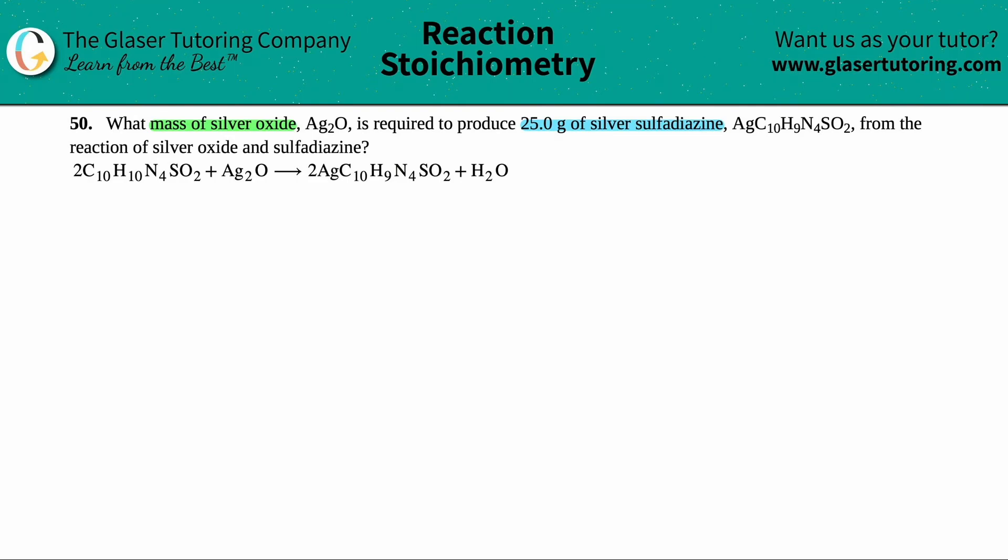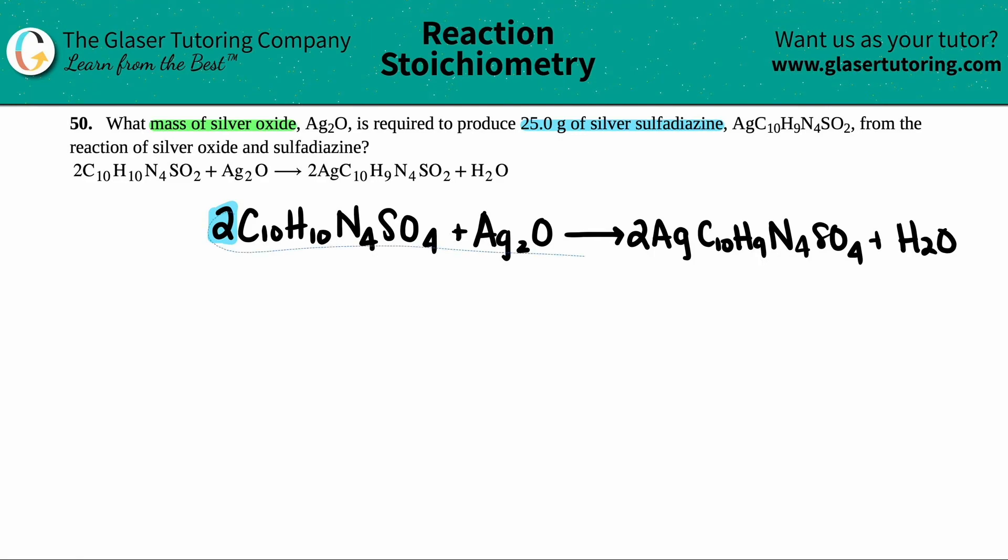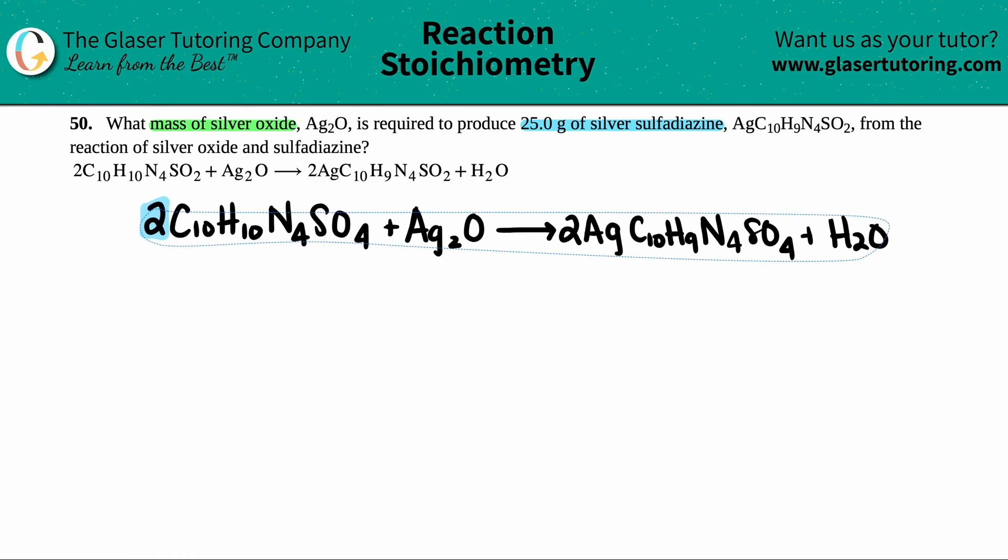I noticed here that they gave me a balanced equation. I see that there are coefficients already in front of some of the numbers. Let's just rewrite that balanced equation so we have it nice and big. Usually if they give you coefficients, you can pretty much be sure already that the equation is balanced. Remember that if you don't see a number in front of compounds in a balanced equation, we have one of them.